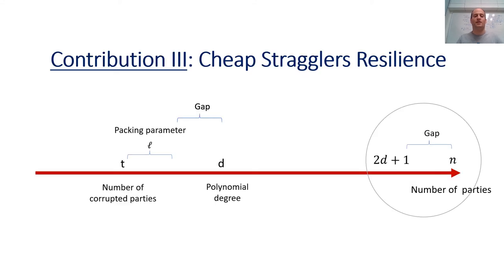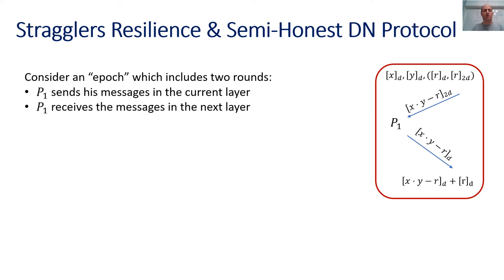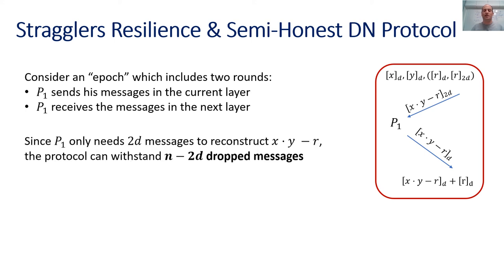Now let's move to our third and last contribution: cheap straggler resilience. Consider an epoch consisting of two rounds: P1 sends second-round messages in the Damgård-Nielsen protocol for the current multiplication layer, then receives first-round messages for the next layer. Since X times Y minus R is shared using a degree-2D polynomial, P1 only needs 2D messages to arrive to reconstruct it. Therefore, even if N minus 2D messages are dropped, the protocol can still proceed — we say the protocol has N minus 2D straggler resilience.